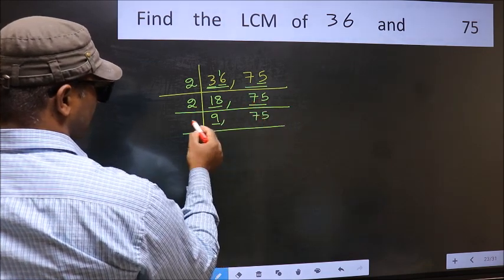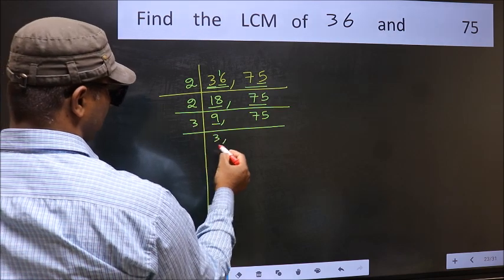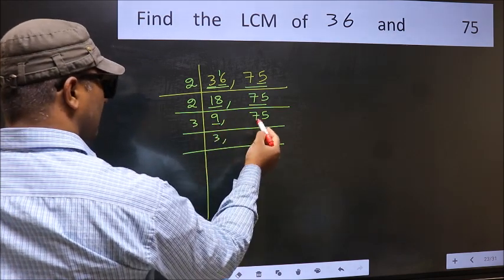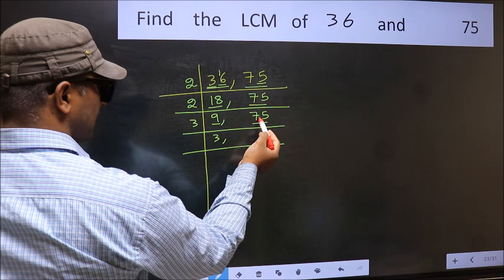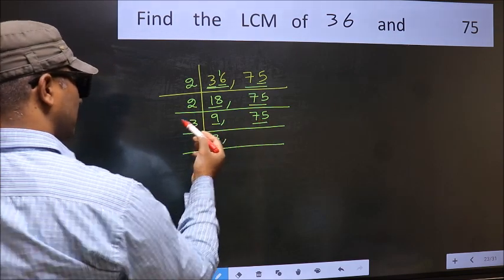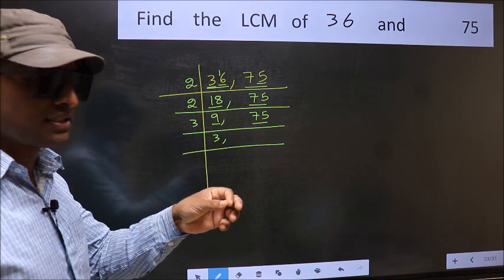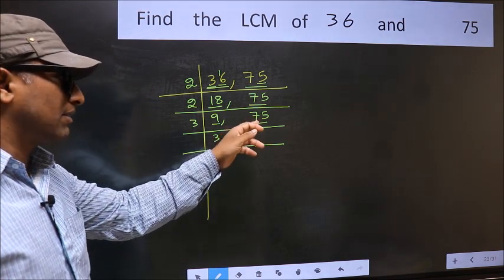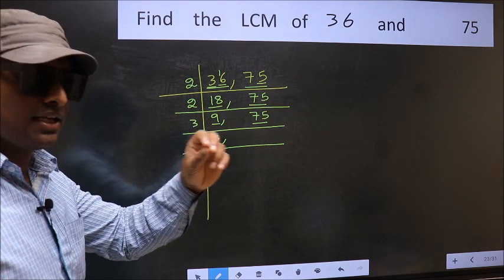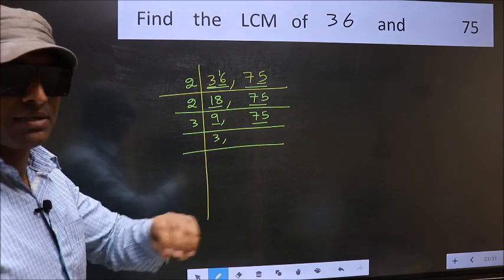Now here we have 9. 9 is 3 times 3, which is 9. The other number 75, to check whether 75 is divisible by 3 or not, add the digits. 7 plus 5, we get 12. And 12 is divisible by 3.